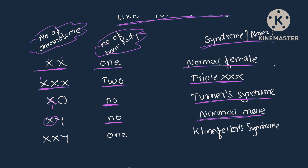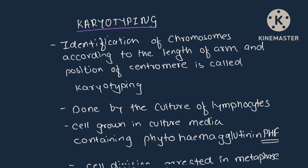When XY chromosomes are present, no bar body is present because only one X is present — this is the normal male. When XXY chromosomes are present, one bar body is present due to the two X chromosomes — this is Klinefelter syndrome.